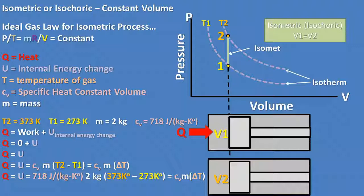The mass of air is 2 kilograms, and the temperature delta or change in temperature is 373 degrees Kelvin for temperature 2, minus 273 degrees Kelvin for temperature 1. So a total temperature change of 100 degrees Kelvin.